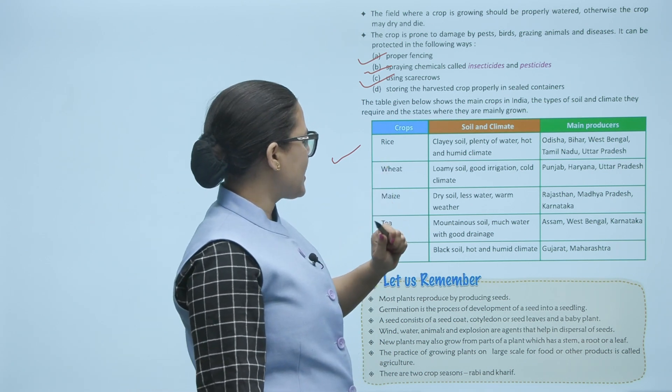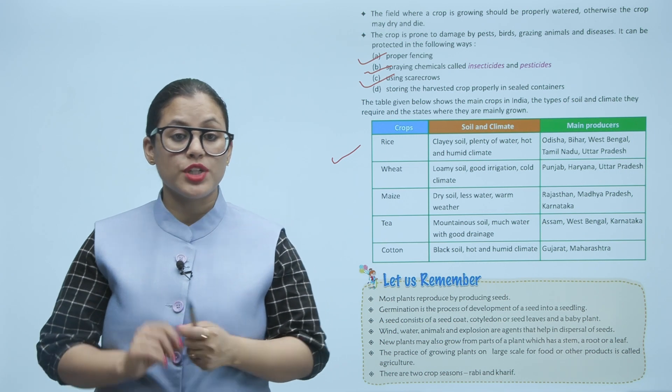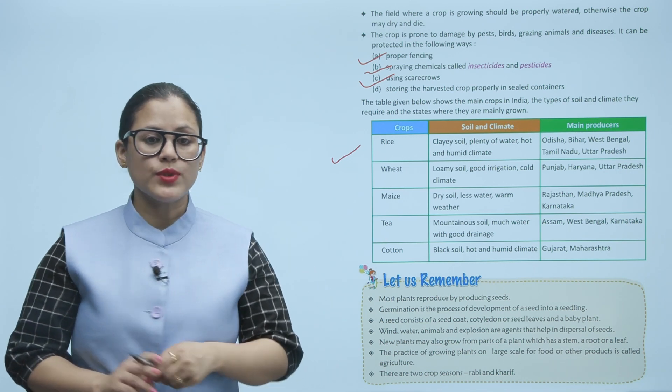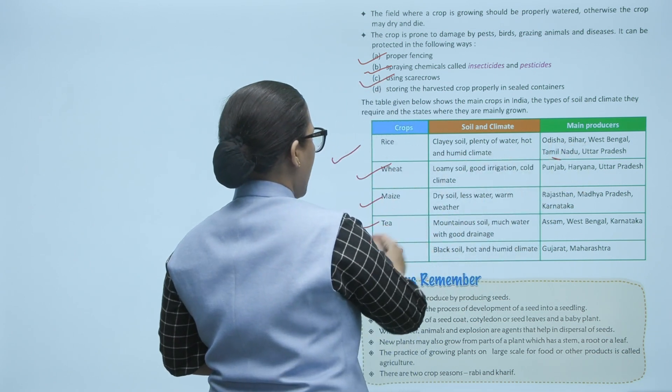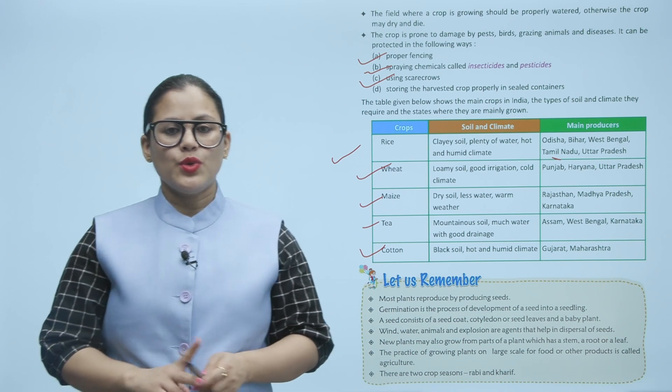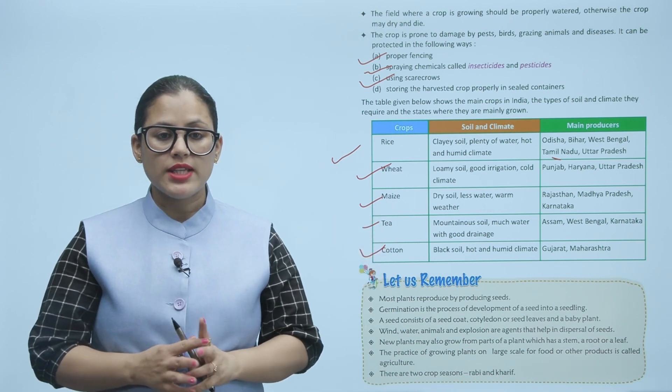For rice, clay soil with plenty of water and hot and humid climate is needed. Main producers are these states. Similarly, for wheat, maize, tea, and cotton, the details are given in the table. You have to go through this table.